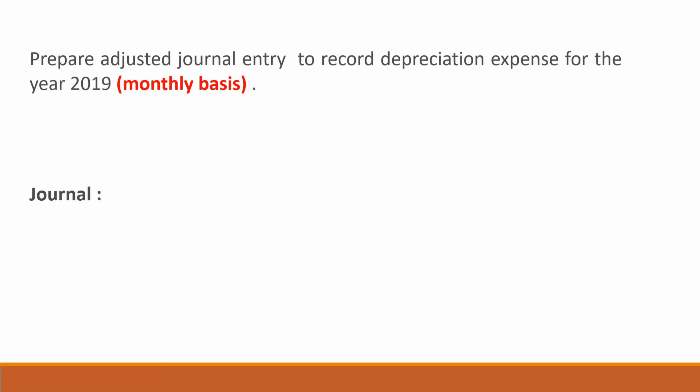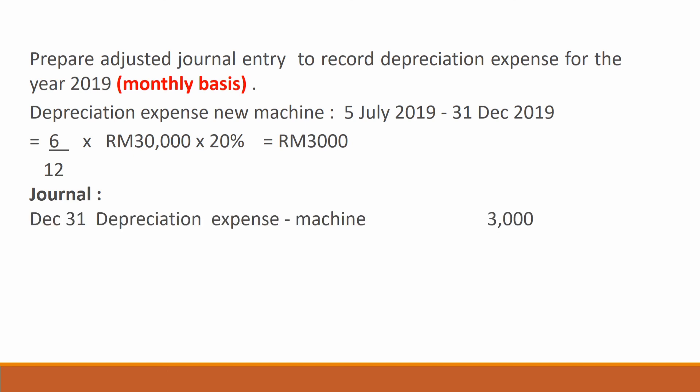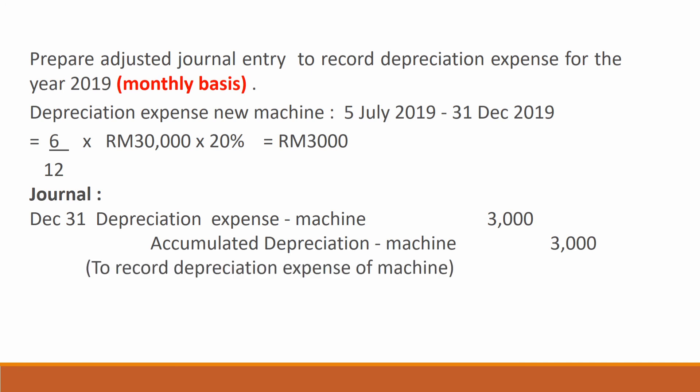Now we prepare the adjusted journal entry to record depreciation expense for the year 2019 based on monthly basis. Depreciation for the new machine from 5th July to 31st December 2019 is 6/12 × RM30,000 × 20% = RM3,000. We record: debit Depreciation Expense and credit Accumulated Depreciation — New Machine, RM3,000. Narration: to record depreciation expense of machine.